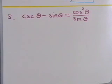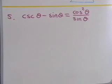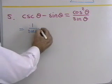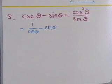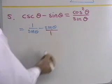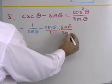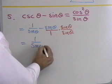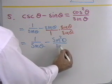Let's see if we can change cosecant θ minus sine θ into cosine squared θ over sine θ. I'll take the left side and try to turn it into the right side. I notice the right side involves only sines and cosines, so let's change cosecant to 1 over sine θ. So the left side is 1 over sine θ minus sine θ. I can add these two expressions since sine θ by itself is the same as sine θ over 1. The common denominator is sine θ, so I multiply sine θ by sine θ over sine θ, giving me 1 over sine θ minus sine squared θ over sine θ.